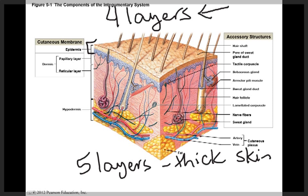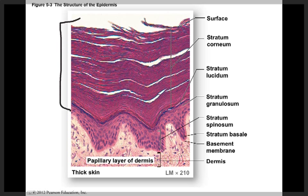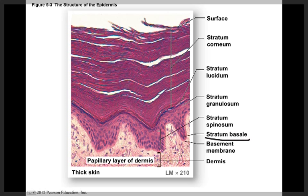Thick and thin skin refer only to the relative thickness of the epidermis. The layers of the epidermis sit on a basement membrane, which holds the epidermis down onto the dermis. The deepest layer of the epidermis is called the stratum basale, or stratum germinativum. In this layer there are stem cells, and once they divide, one daughter cell will move up into the next layer while the other stays in the stratum basale to remain as a stem cell.